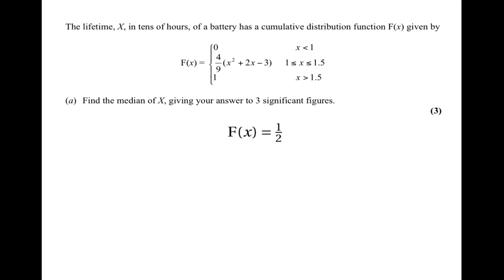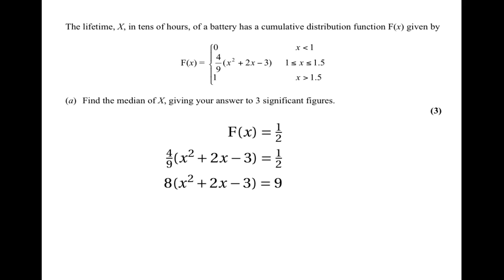To find the median, we need to solve the equation F(x) = 1/2, because the cumulative probability at the median will be a half and F(x) tells us the cumulative probability. So we need to find when F(x) = 1/2. Since F(x) = 4/9 × (x² + 2x − 3), we solve 4/9 × (x² + 2x − 3) = 1/2. Cross-multiplying gives 8(x² + 2x − 3) = 9, so 8x² + 16x − 24 = 9, and therefore 8x² + 16x − 33 = 0.